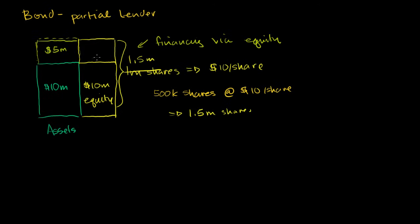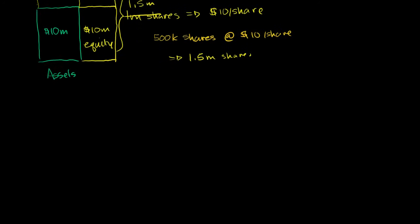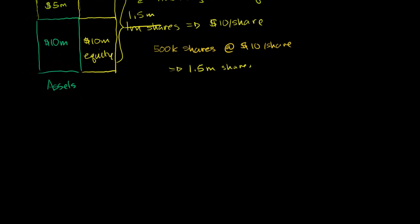Now, the other way to do it is to borrow the money. So let me redraw this company. I'll leave this up here just so we can compare the two. So once again, we have $10 million of assets. We have $10 million of equity to start off with.